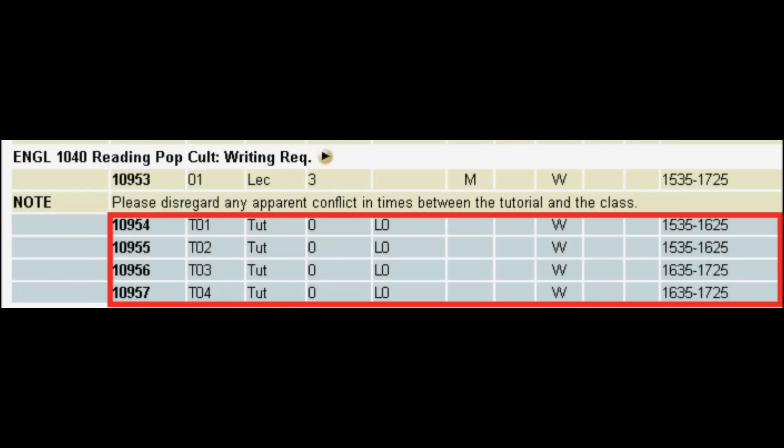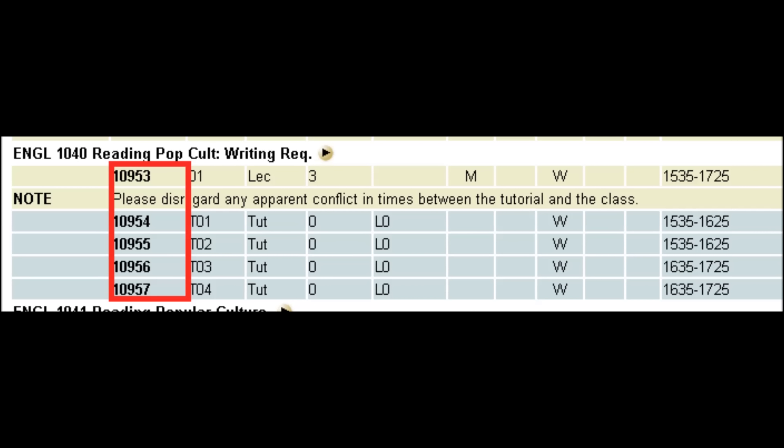This is suggested because there are usually many more tutorials or labs to choose from than there are lectures, so they'll be easier to fit in. Another piece of information that we need to write on our blank timetable is the CRN. In our example, the CRN for English 1040 is 10953. Note: CRNs for fall classes always start with a 1, CRNs for winter classes always start with a 2, and CRNs for summer courses always start with a 3. The CRN for a tutorial in this example is 10954.